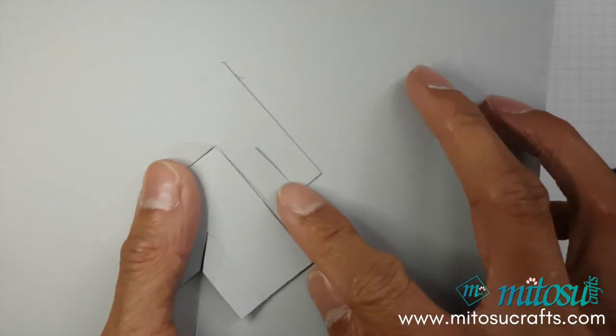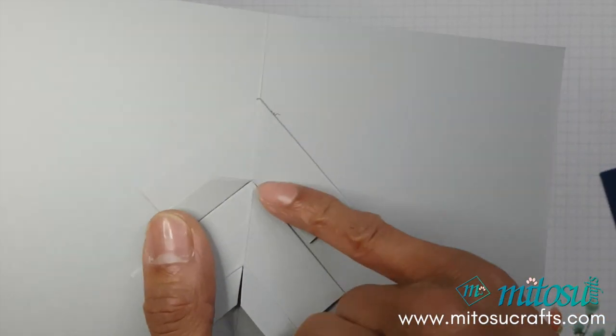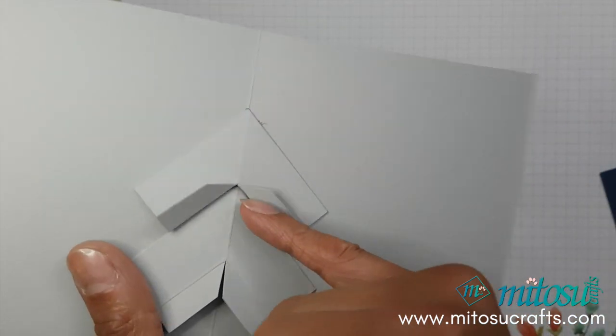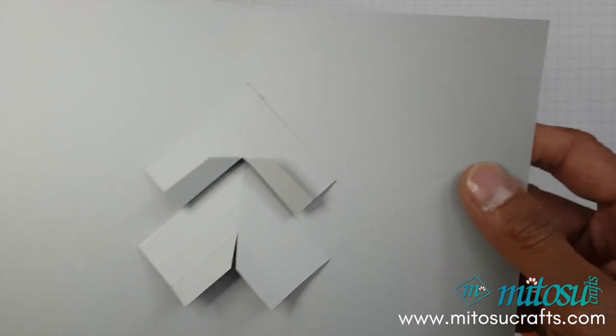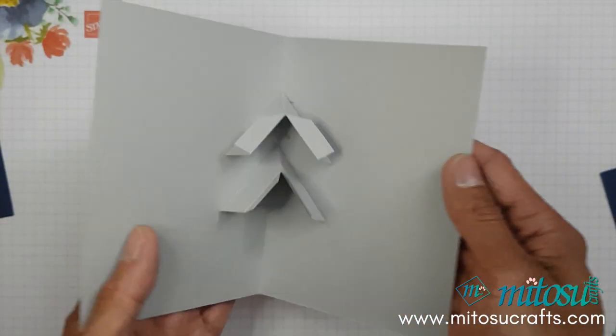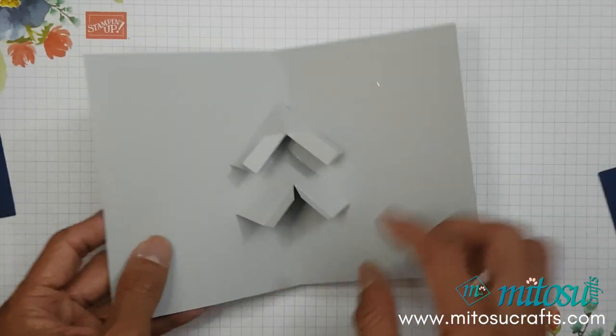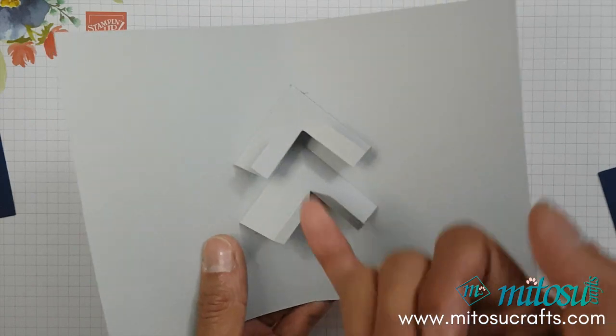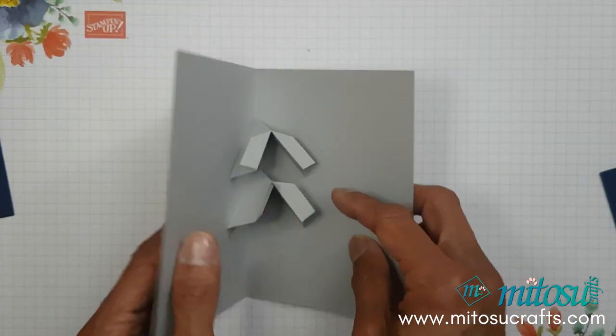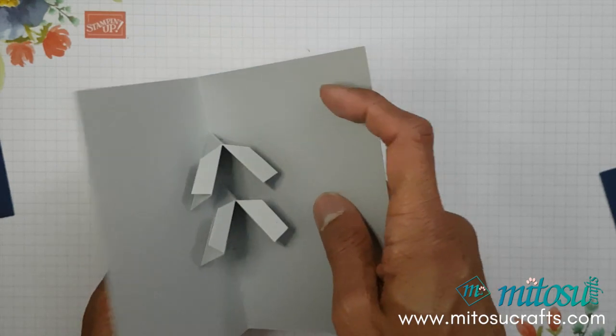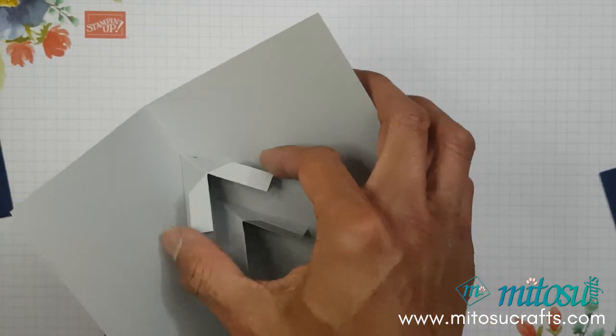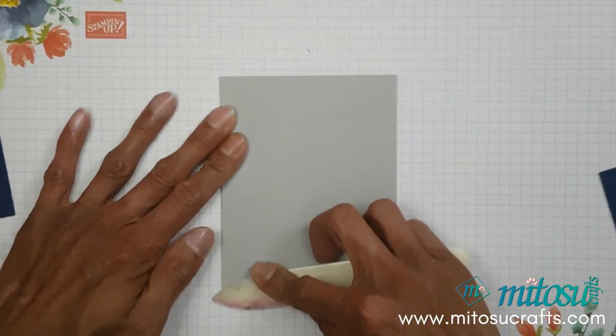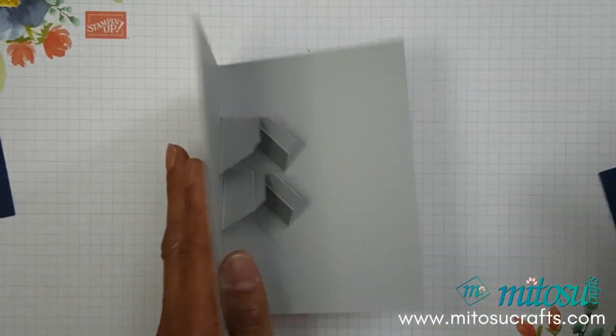Just make sure that when you adhere the second one, it doesn't get caught on the first mechanism. When you first fold it down, sometimes it won't come up automatically, so you just need to lift those up. Then that's going to go like that.